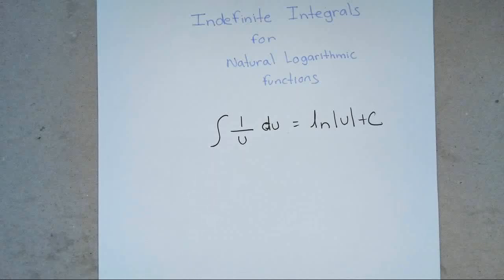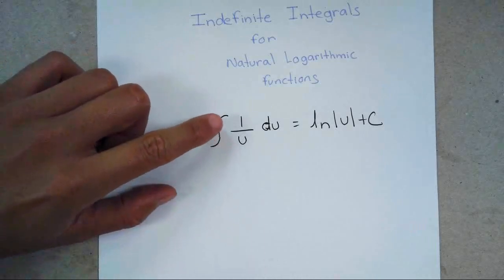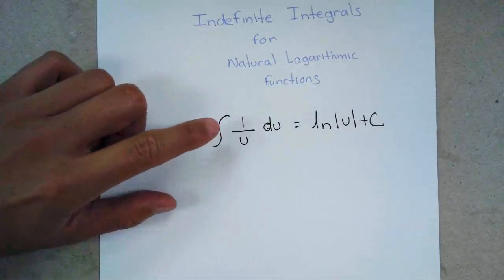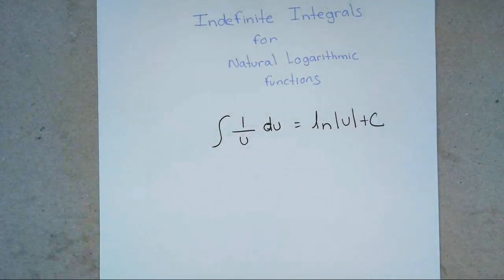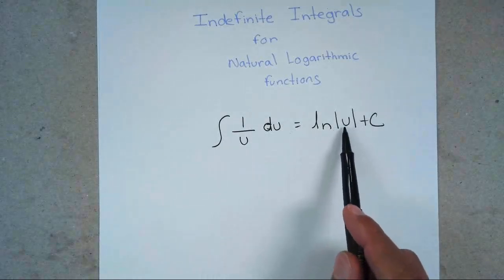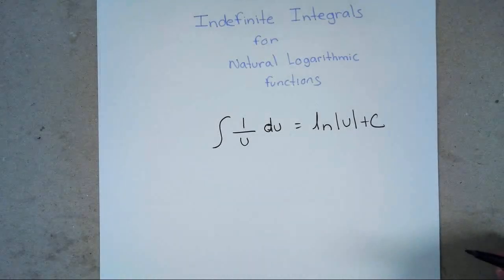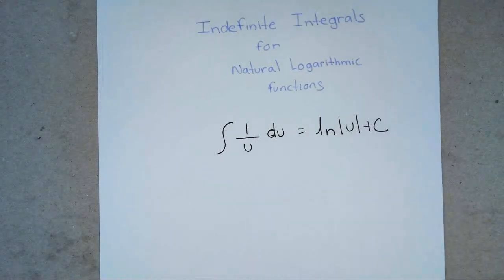Hi everyone. In this video we're going to be discussing how to actually find an integral of a natural logarithmic function. What that means is, what you're looking for is this pattern: 1 over u. When you notice that it's 1 over u, the anti-derivative of 1 over u is ln of the absolute value of whatever u is. Now this means there's going to be a lot of u substitution. So we're going to go ahead and get started.